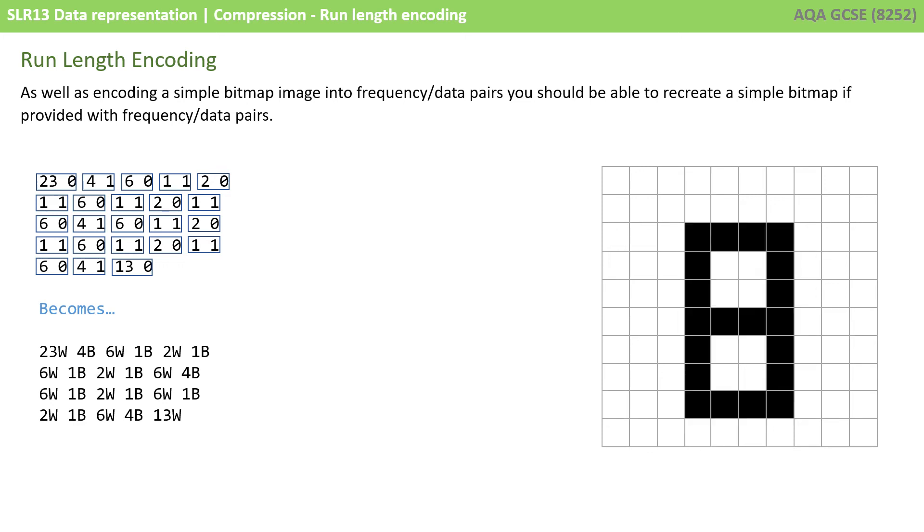It now becomes a simple matter of following those frequency data pairs, drawing out 24 white pixels from left to right, followed by 4 black, and so on and so forth.